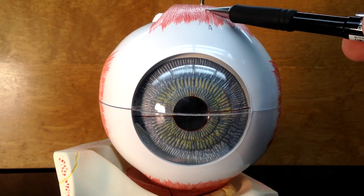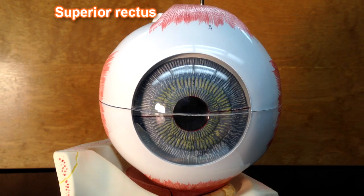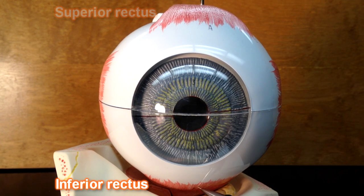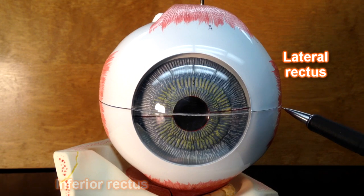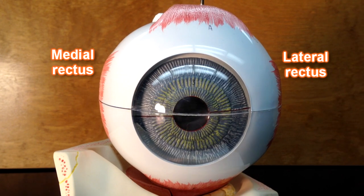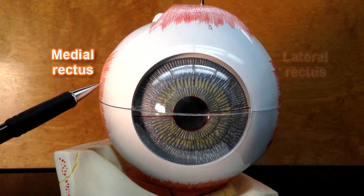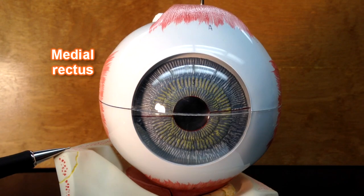This would be superior rectus. Inferior rectus we would be able to see here. Lateral rectus we would see on the side over here. And then medial rectus would be on the side here. The nose would be right here.